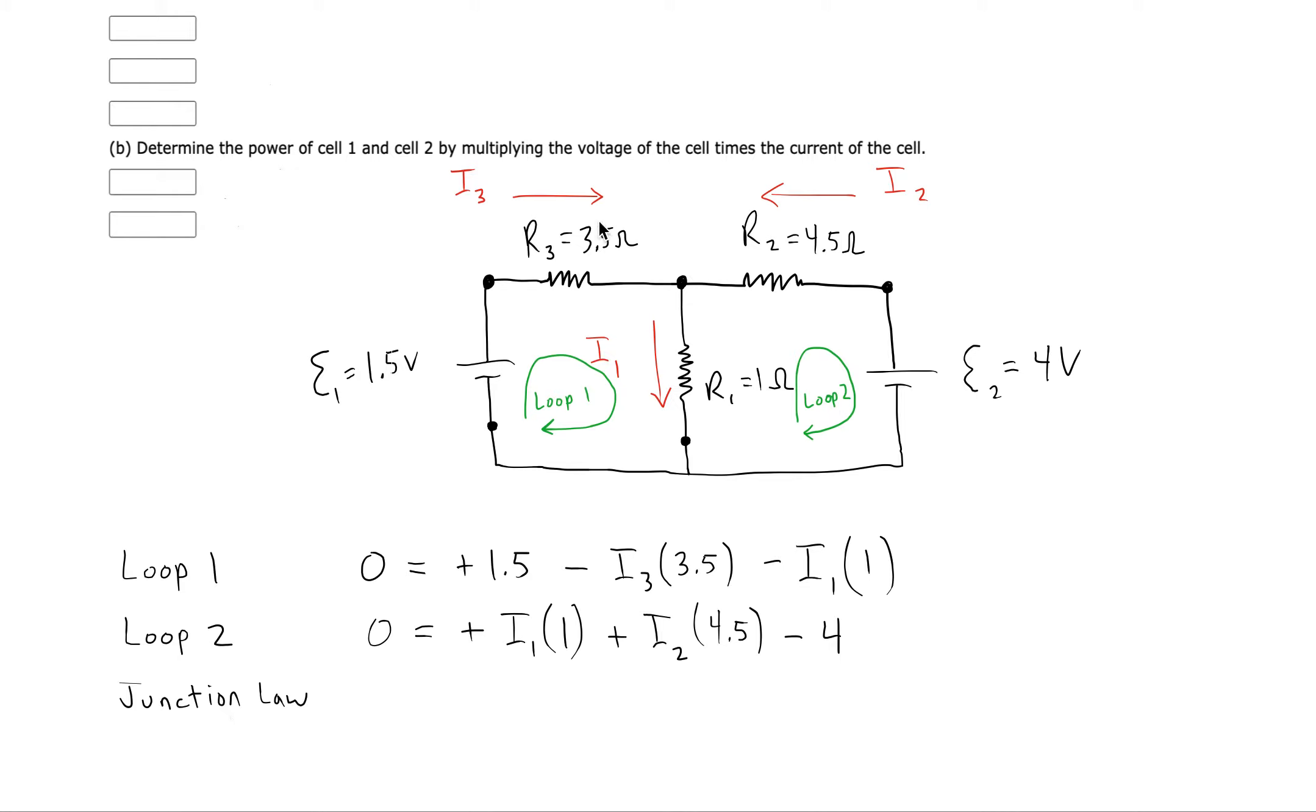Okay, so now we can write our junction law. We see in our junction that we have I3 coming in from the left. We have I2 coming in from the right. And then I1 leaves through the middle. So that's going to be our junction law, then. I2 plus I3 equals I1. It's based on the flow of current this time rather than the potential. So those are going to be my three equations. That's all we need. Just three different equations for the three unknowns.